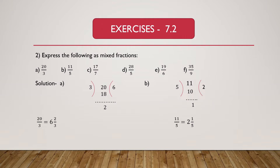Part B is given as 11 by 5. Express 11/5 as a mixed fraction. Here 11 is the dividend and 5 is the divisor. We know 5 multiplied by 2 is 10, then 11 minus 10 is 1. We get 2 as the quotient and 1 as the remainder. Mixed fraction equals quotient remainder divided by divisor, so 11 divided by 5 equals 2 and 1/5.